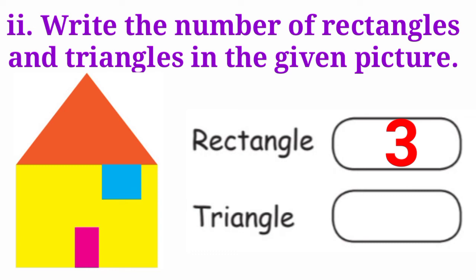Next, triangle. Only the roof of the house is in triangle. Hence, we have to write 1 in that box.